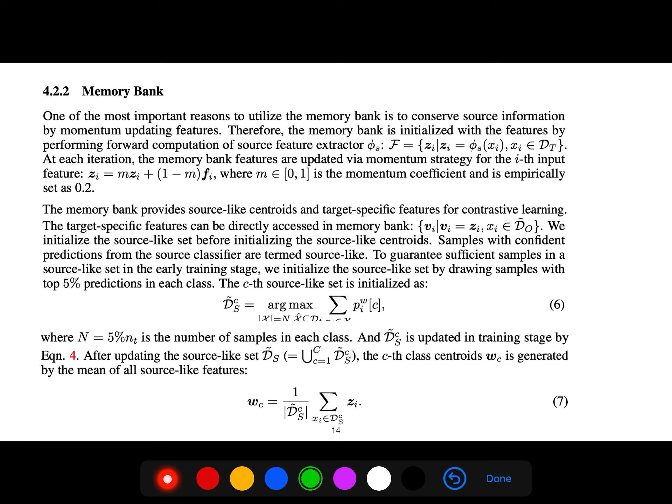One of the most important reasons to utilize the memory bank is to conserve source information by momentum updating features. Therefore, the memory bank is initialized with features by performing forward computation of the source feature extractor. At each iteration, the memory bank features are updated via momentum strategy.